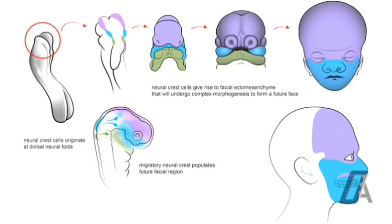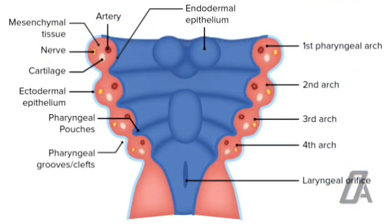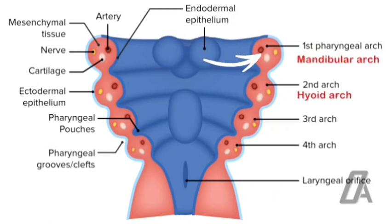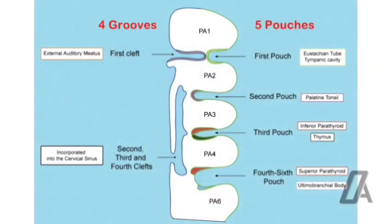The mesodermal core of each arch is surrounded by invasion of ectomesenchymal tissue that augments it. There are five branchial arches in total, the fifth being transitory. The first arch is the mandibular arch, and the second is the hyoid arch. The branchial arches are separated by four branchial grooves on the external aspect and five pharyngeal pouches on the inner aspect.